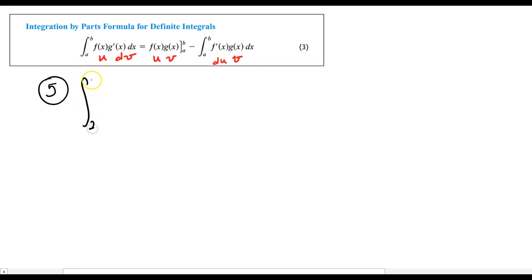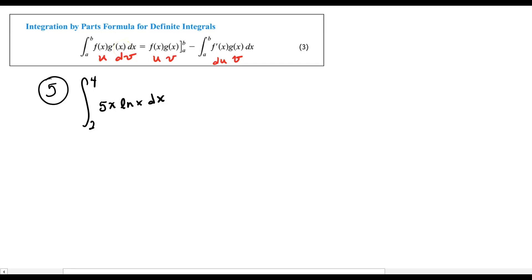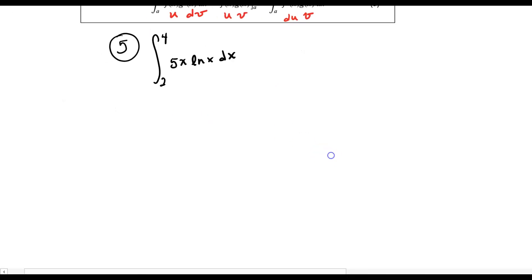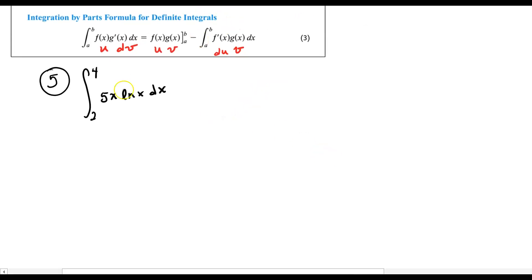Let's go ahead and take a look. We're going to integrate from two to four and we've got 5x times the natural log of x dx. I kind of know that it's probably easier to integrate the algebraic functions, and the logarithmics are the ones we're going to want to take the derivative of. So we're going to use this integration by parts formula, try to break it down, and then we'll evaluate it.